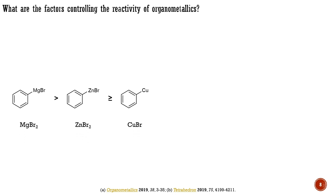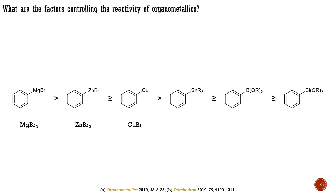Another supporting factor for the transmetallation from these organometallics is that the byproduct in organic salts, such as magnesium bromide, are not soluble in organic solvents. They usually precipitate from the reaction media, favoring the transmetallation. Organometallics based on metalloids are typically less reactive, enabling good functional group tolerance. However, these substrates often require a base for activation. It's worth noting that the base is not always necessary for organo-tin reagents.